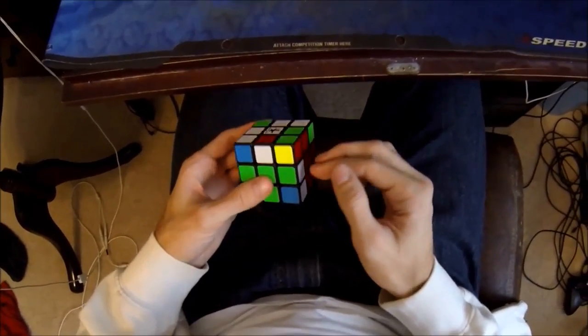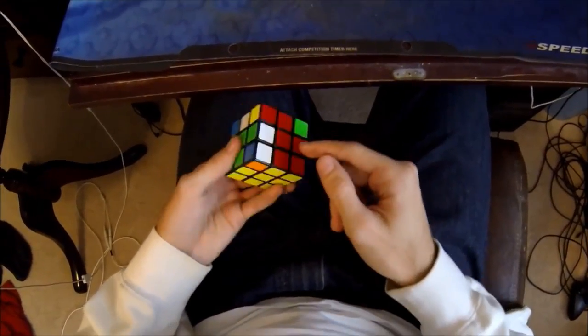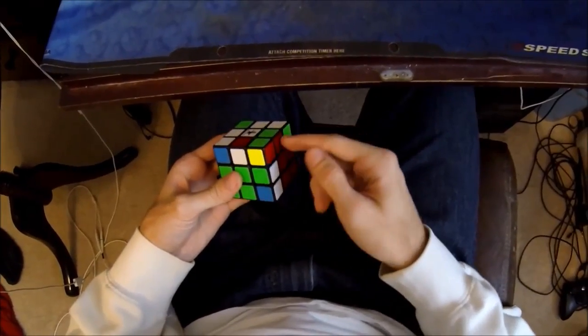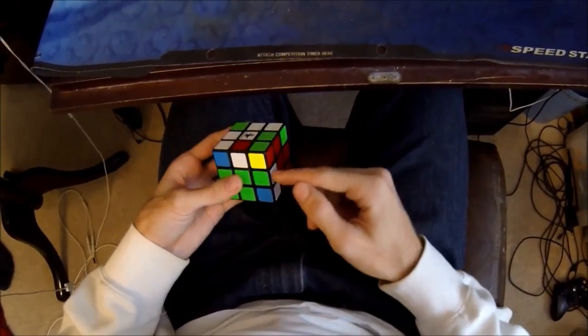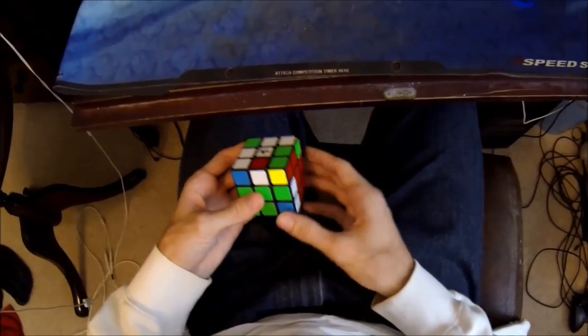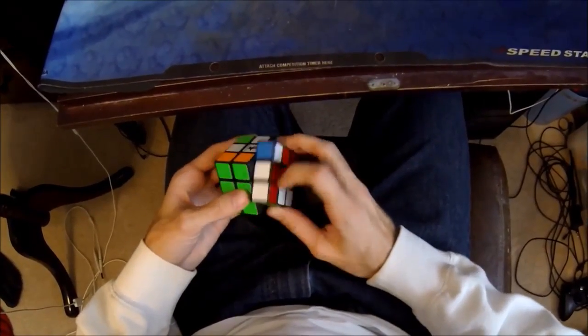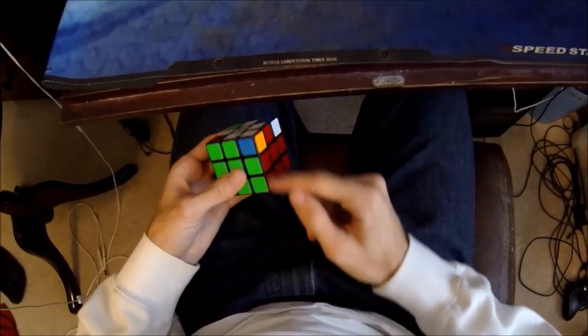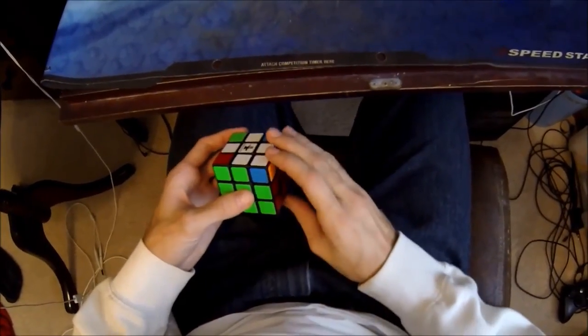And this method is an expansion of the VH method. Where the VH method, all you did was you place the pair while orienting your edges. So for this case, you go like this. So that solves a pair and gives you a nice plus sign on the top.